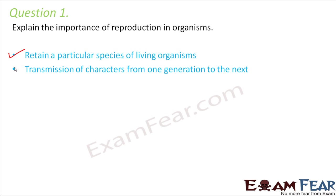Transmission of characters from one generation to the next — it is because of reproduction that one generation looks similar to their previous generation, and again that generation looks similar to their previous generation. So this concept of inheritance is possible because of reproduction.